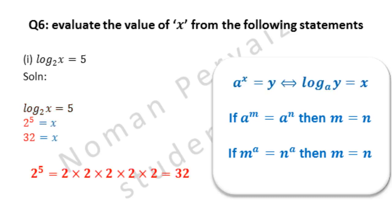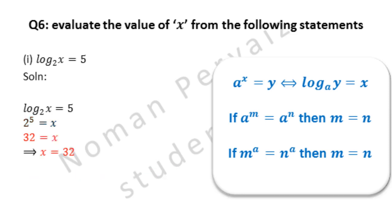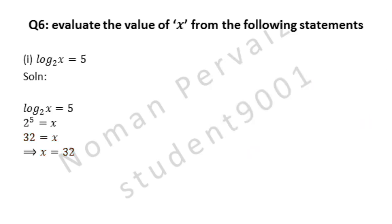2 to the power 5 is evaluated to get 32, as shown in details below. We write 2 five times and multiply them: first 2 multiplied with 2 becomes 4, then 4 multiplied again with 2 becomes 8, then 8 multiplied with 2 becomes 16, then 16 multiplied with the last 2 becomes 32. So x is equal to 32. Hence, this is our answer.